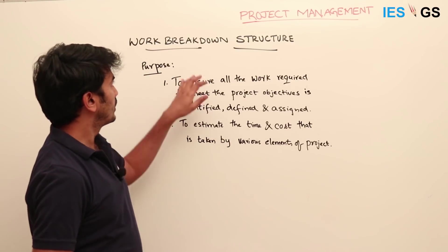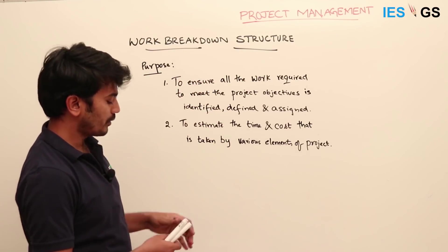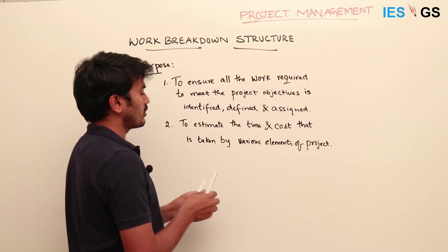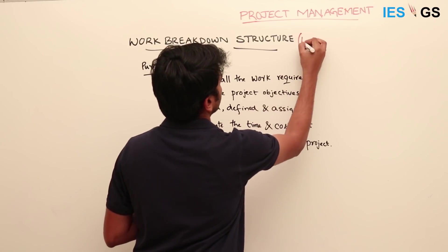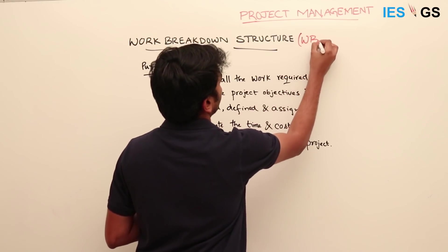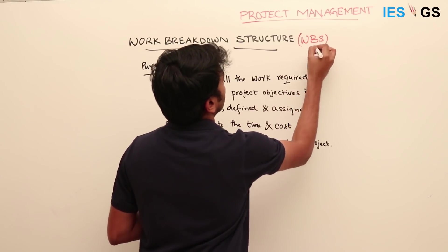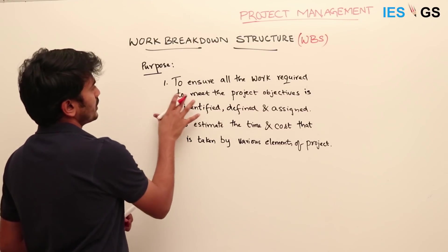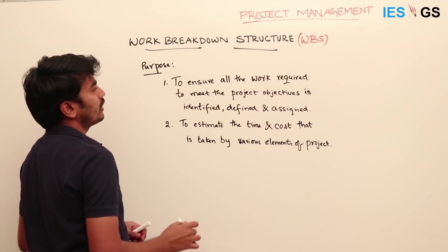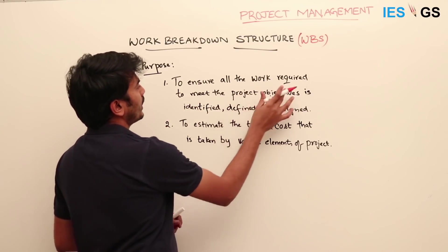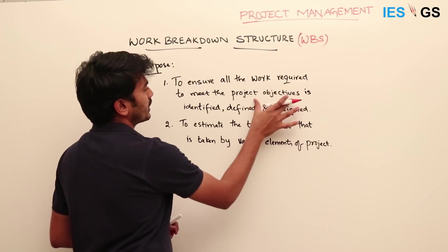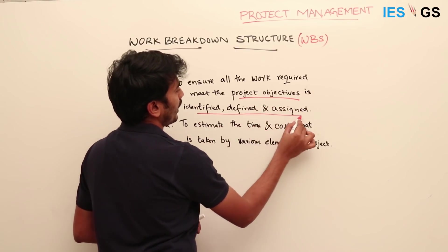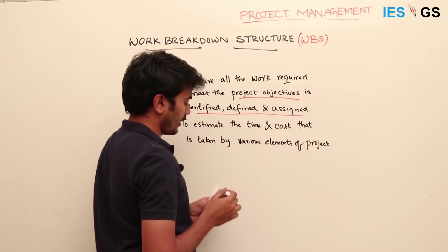The main purpose of the Work Breakdown Structure — also called WBS in short form — is to ensure all the work required to meet the project objectives is identified, defined, and assigned.